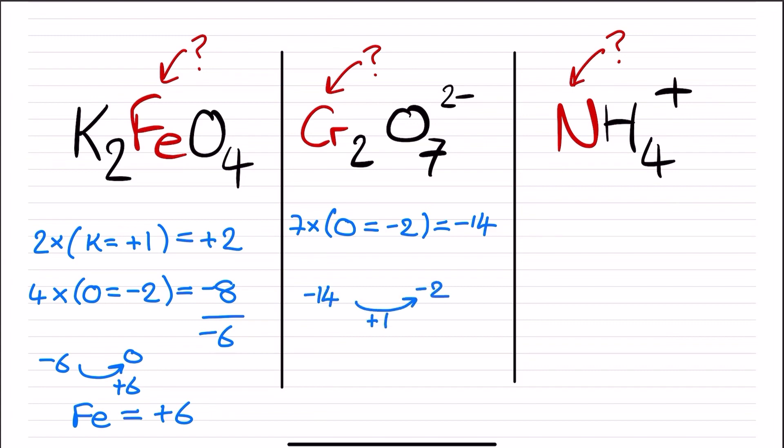The gap between the negative fourteen and the negative two needs to be bridged by the chromium. To meet this demand, each chromium must be positive six.